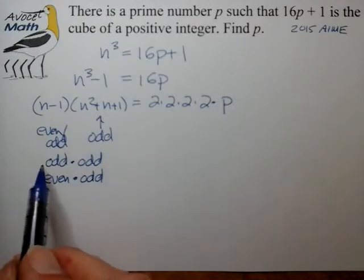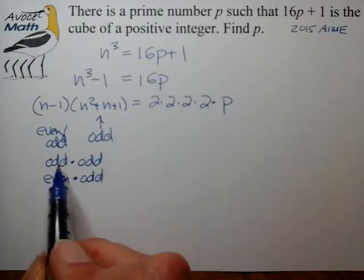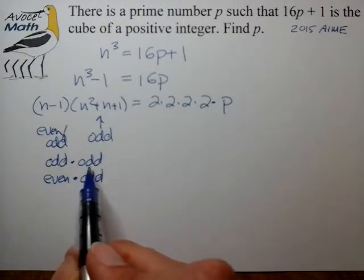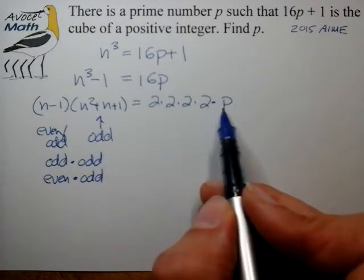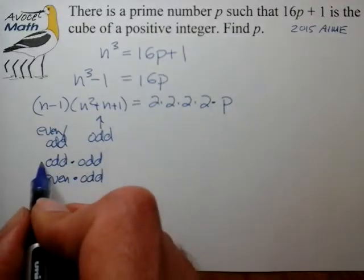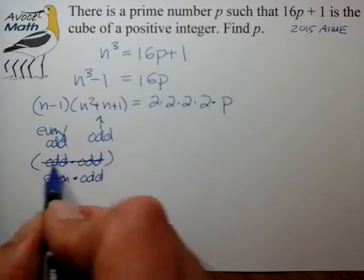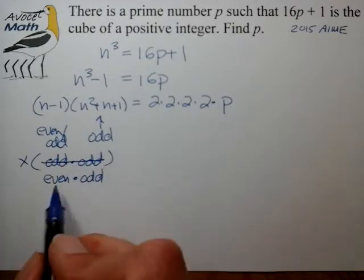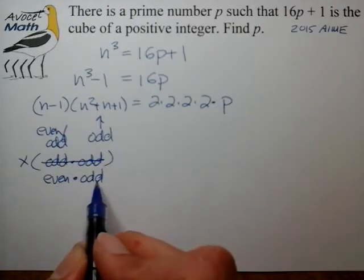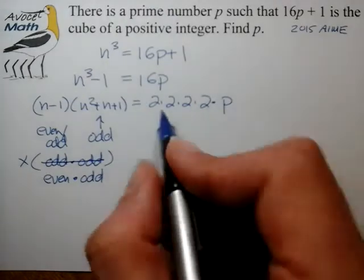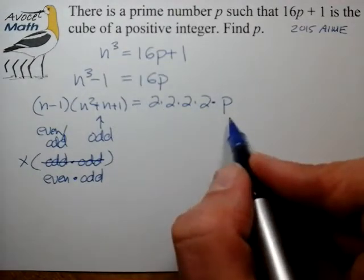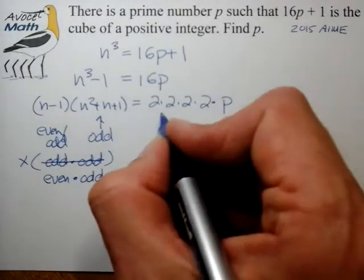And by looking at these two cases we realize that we really can't form an odd times an odd and have that match up in any way with the factors of 2 on the right hand side. So we can pretty much eliminate the odd times an odd. That's not really a possibility. And all we're left with basically is an even times an odd number that has to somehow match up with the factors on the right. And when we look at this factor group on the right we realize that we can break this up in four different ways.